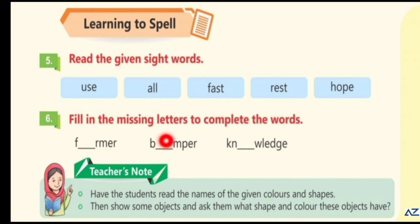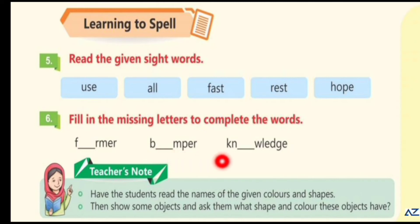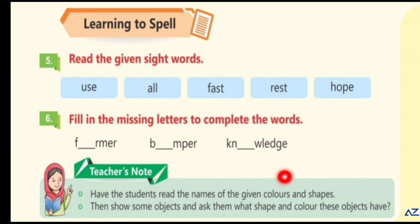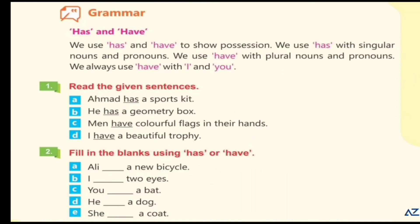Fill in the missing letters to complete the words. Farmer — F-A-R-M-E-R. Bumper — B-U-M-P-E-R. Knowledge — K-N-O-W-L-E-D-G-E. Teacher's note: help the students read the names of the given colors and shapes, then show some objects and ask them what shape and color these objects have.